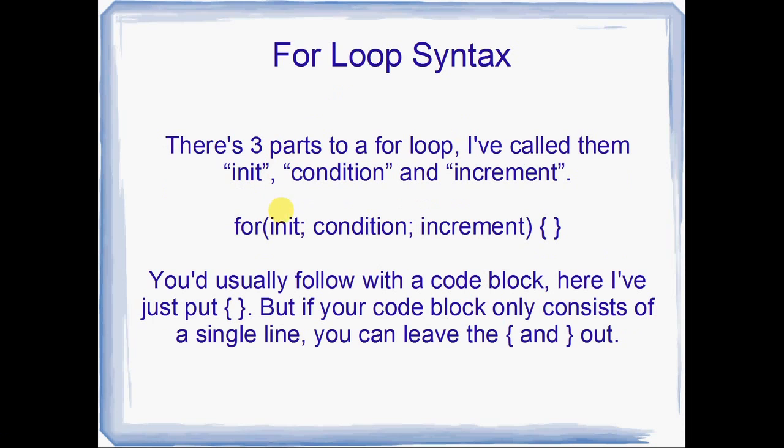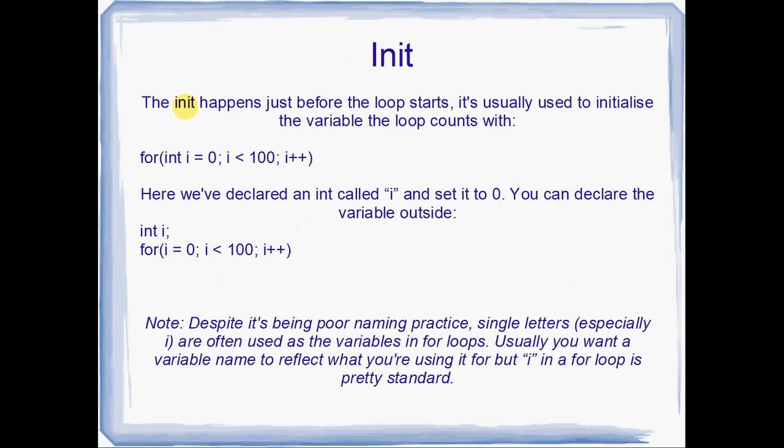There are three parts to a for loop. First you've got the keyword for, then in brackets you've got these three bits separated by semicolons. I've called them the init, the condition, and the increment. And then you've got the body of the for loop after that. Let's go through those one at a time.